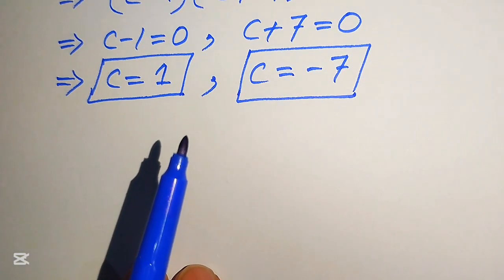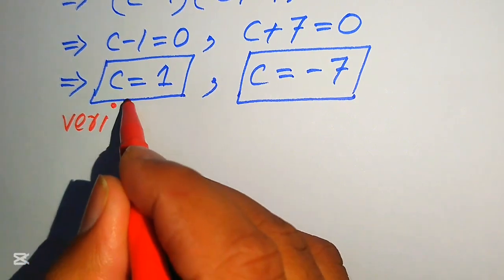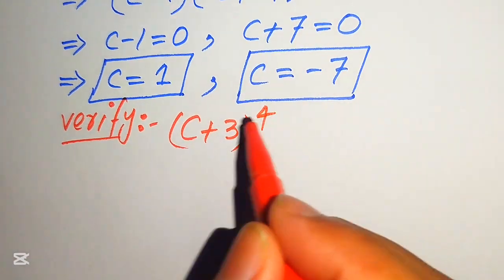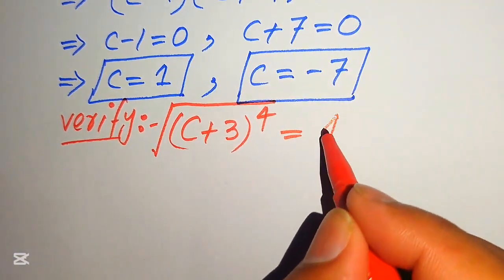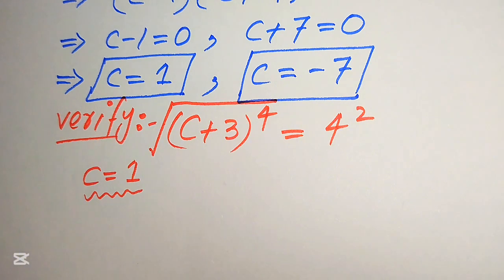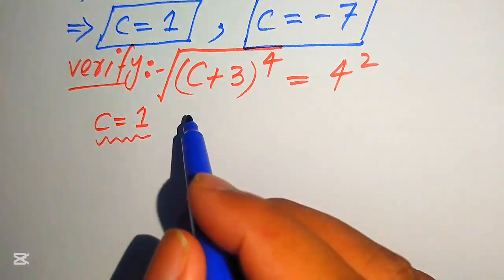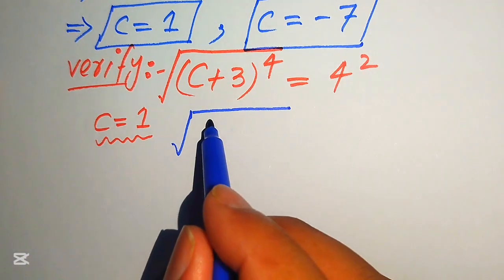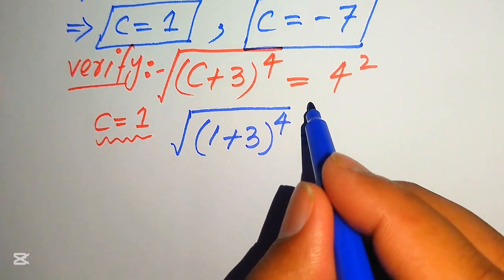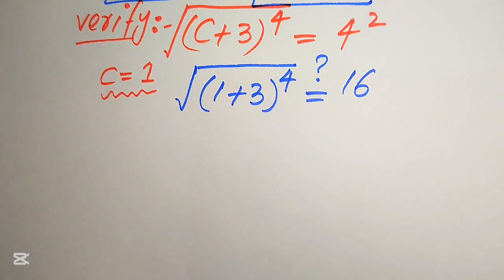Now we need to verify these two values and check whether they satisfy the given equation. We copy down the equation: the square root of (c + 3) to the power of 4 equals 4 squared. First, we verify c equals 1 by substituting into the left hand side: square root of (1 + 3) to the power of 4. The right hand side is 4 squared equals 16.